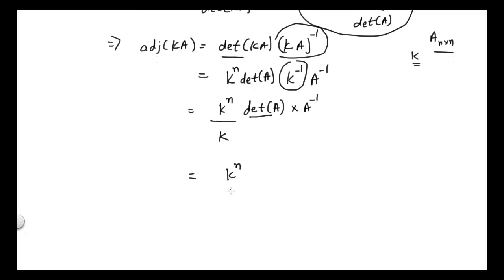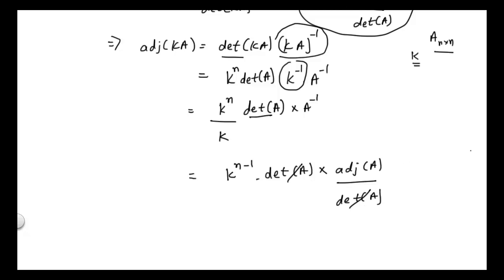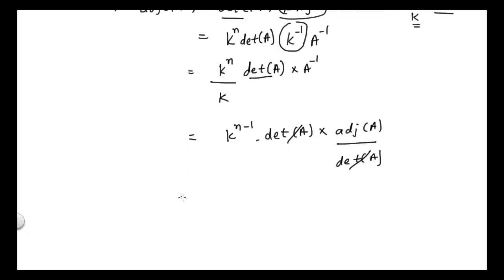Now I can substitute the value of A inverse: A inverse equals adjoint of A divided by determinant of A. The determinant of A in the numerator and denominator cancel each other, so the final answer is k^(n-1) times adjoint of matrix A, where the order of matrix A is n cross n.